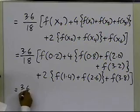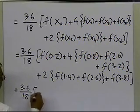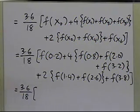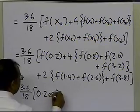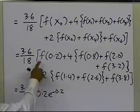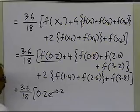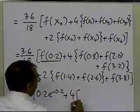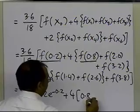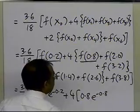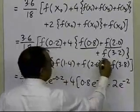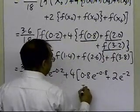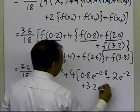So here we get 3.6 divided by 18, and now all we have to do is to substitute the values of the function at those particular points. I'm going to spell it out so that you have a better reference: 0.2 times e to the power of minus 2, because that's the value of the function at 0.2, plus 4 times the value of the function at 0.8, which is 0.8 e to the power of minus 0.8, plus the value of the function at 2, which is 2 e to the power of minus 2, plus the value of the function at 3.2, which is 3.2 e to the power of minus 3.2.